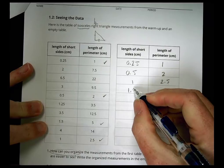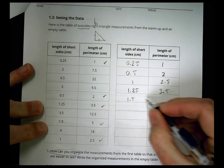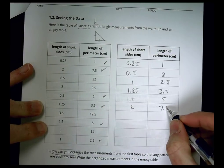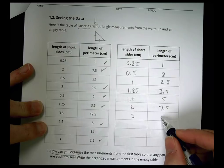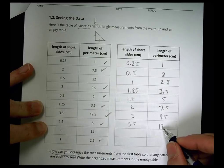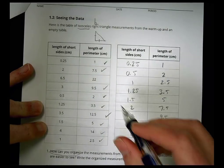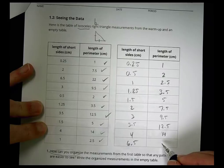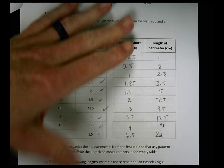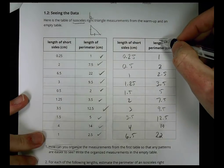My smallest value is 0.25 and the length is 1, so I can check that one off. Then we have 0.5 and 2, then 1 and 2.5. If I'm going too fast, just pause and check back. I did 1.5 - that'll help you catch up because I messed up. So 1.25 and 3.5, followed by 1.5 and 5, then 2 and 7.5, then 3 and 9.5, then 3.5 and 12.5, then 4 and 14, and finally 6.5 and 22. Here we have the data organized smallest to largest to help us see if there's any pattern between the short side and the perimeter.